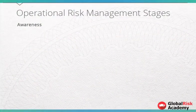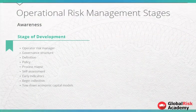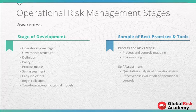In the Awareness Development stage, we need to establish an operational risk manager, governance structure, definitions, policy, process maps, self-assessment, and early indicators, and begin collection and top-down economic capital models. Sample process and risk maps include process and controls mapping and risk mapping. Sample self-assessment could be qualitative analysis of operational risks or effectiveness evaluation of operational controls.